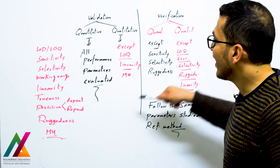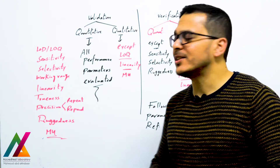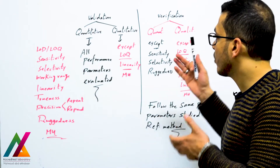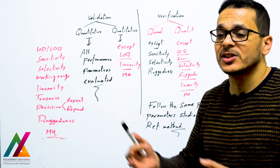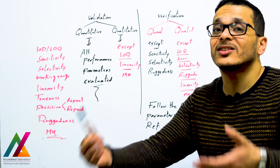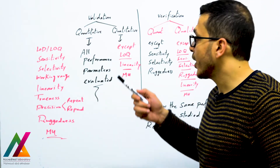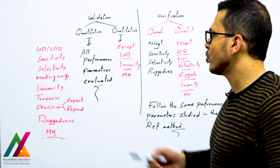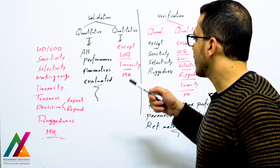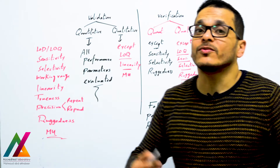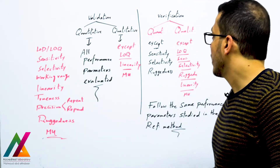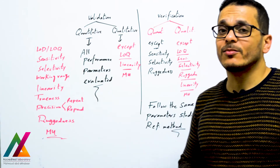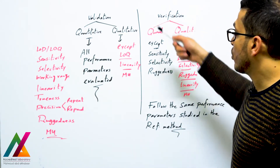For a qualitative method, you don't need to evaluate the limit of quantitation since you only need to detect presence or absence, not quantify anything. You also don't need to evaluate working range, linearity, or measurement uncertainty for qualitative methods.